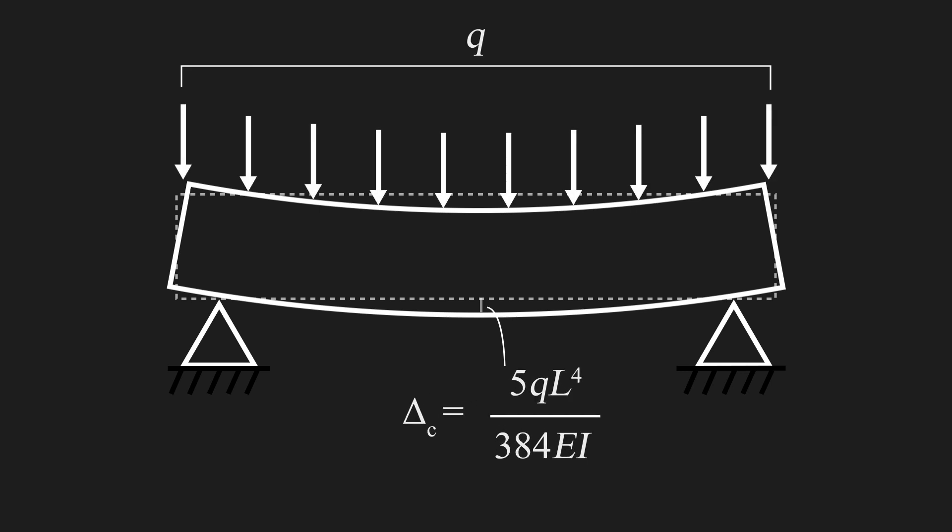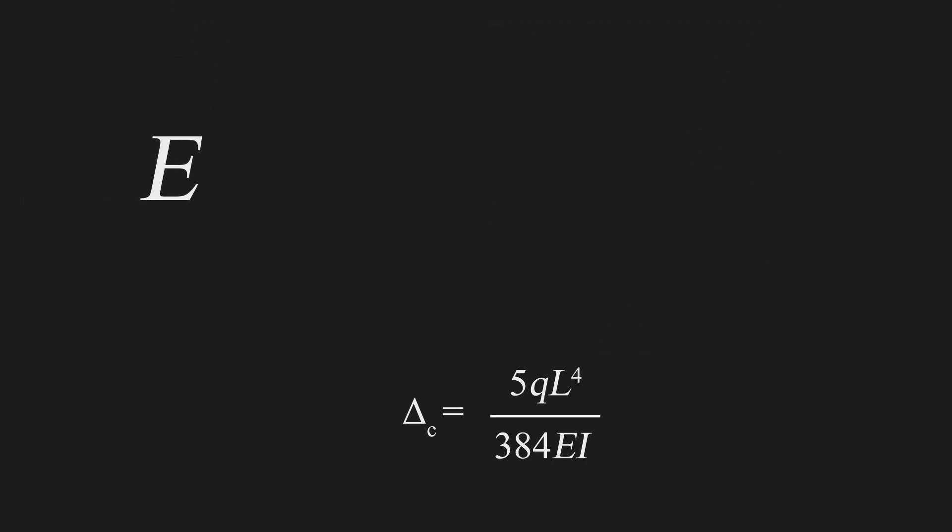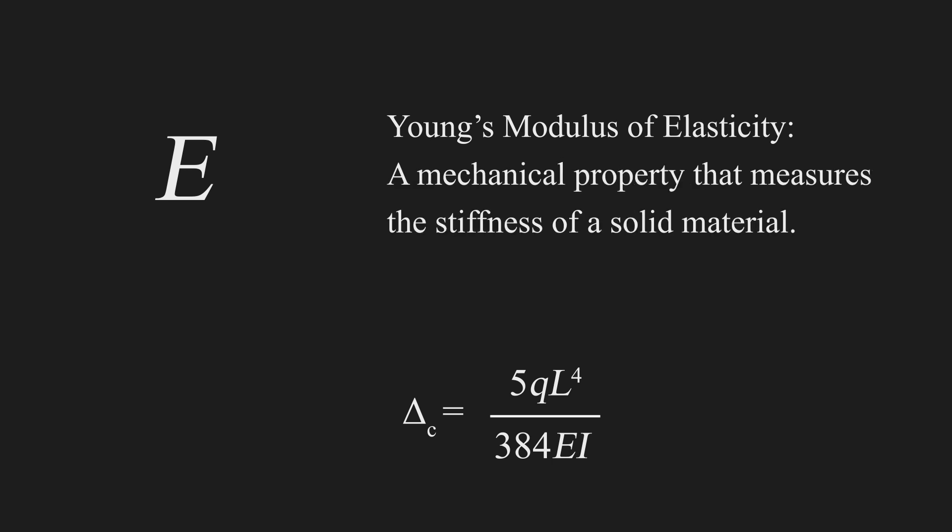Q is our uniformly distributed load, L is the supported length of the beam, and E is our Young's modulus of elasticity. Simply, this is a property of the material which defines how stiff it is.